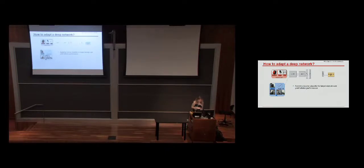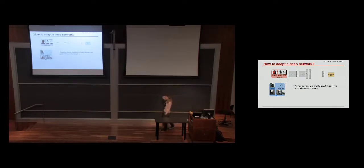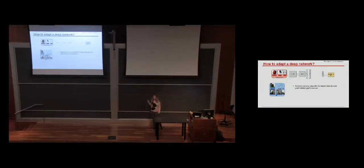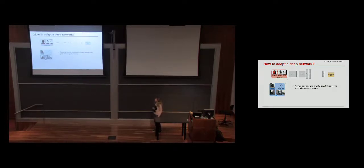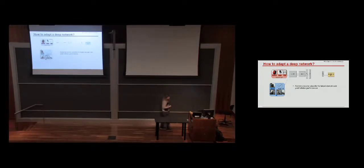Now we have a new target domain. In this example, the source data is clean web images with white backgrounds, while the target domain comes from a mobile robot moving around an office snapping photos — quite different. We want to apply our source-trained model to this target domain. For the rest of this talk, I'll assume we have no labels in the target domain, and if we just apply the model directly it won't work well.